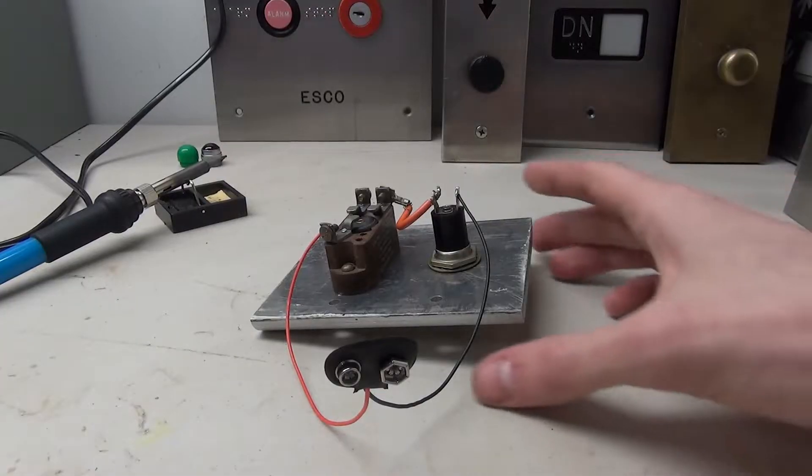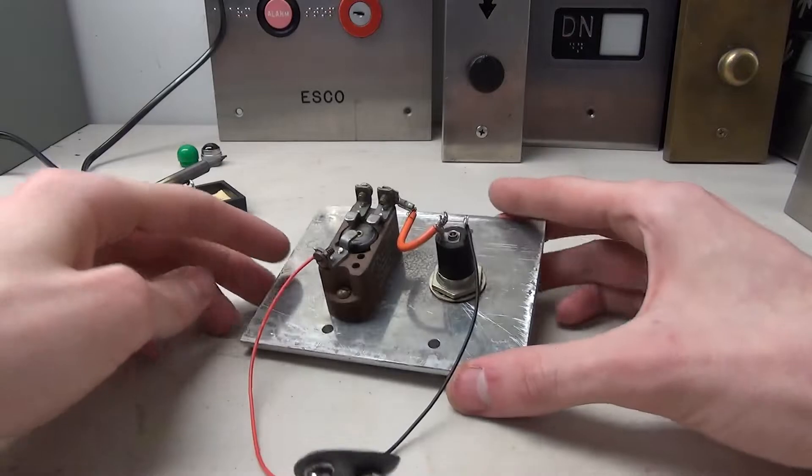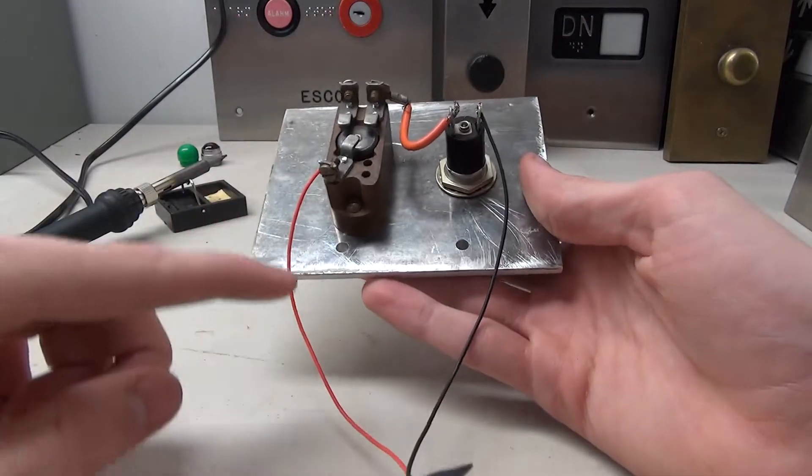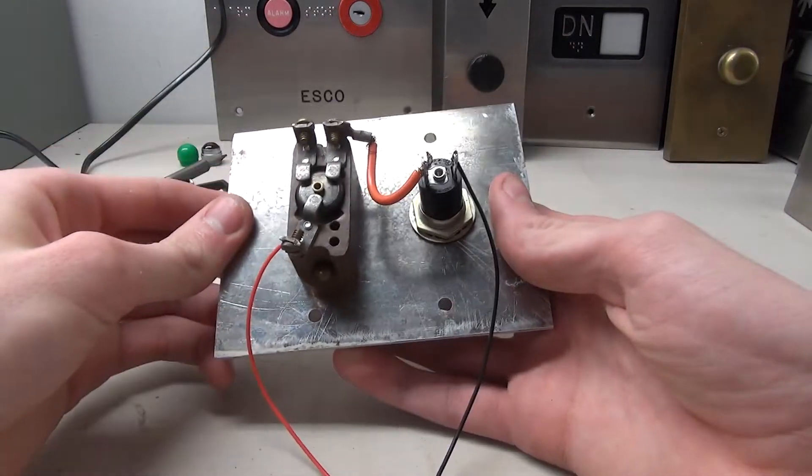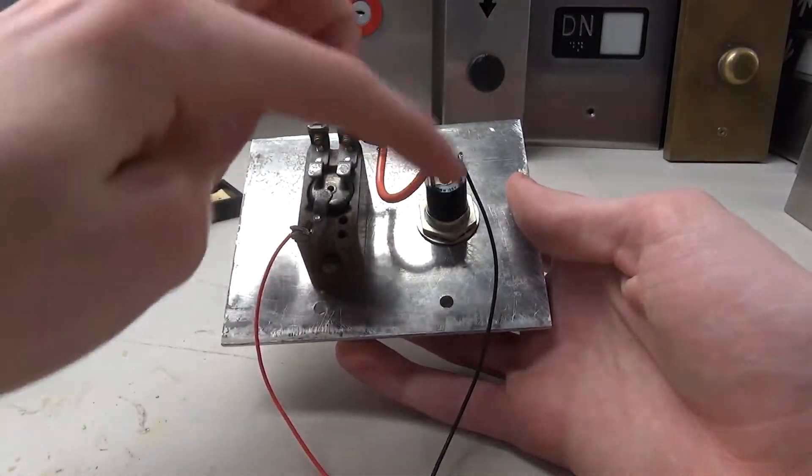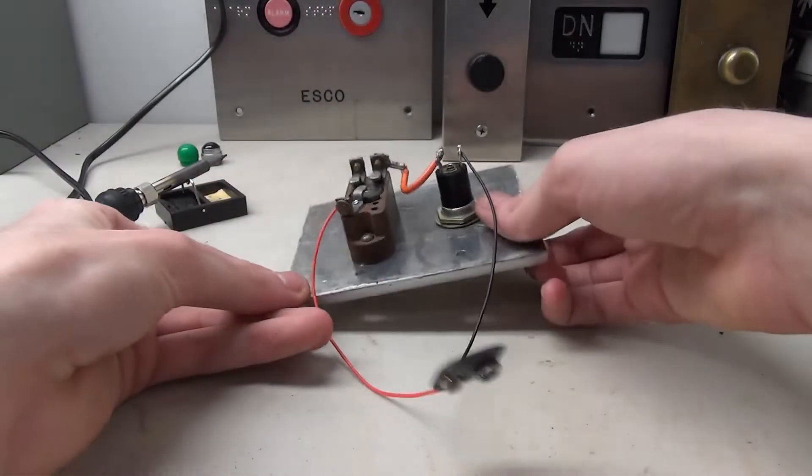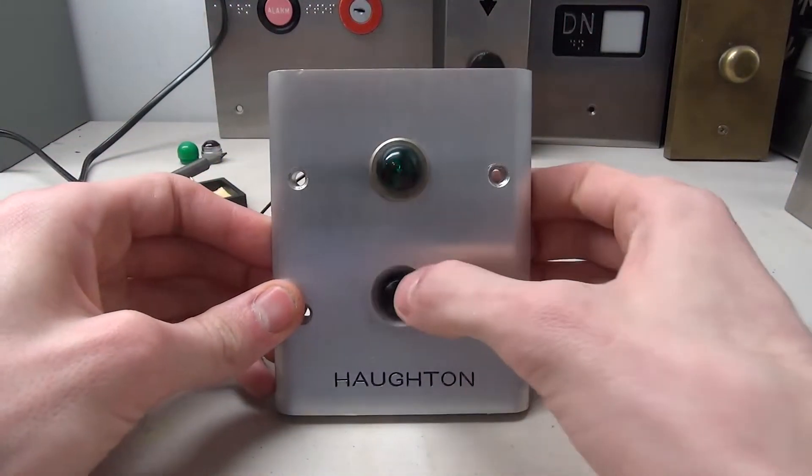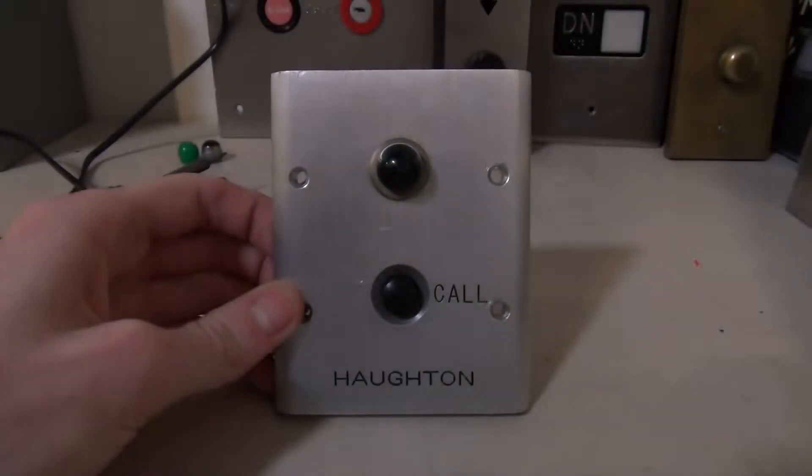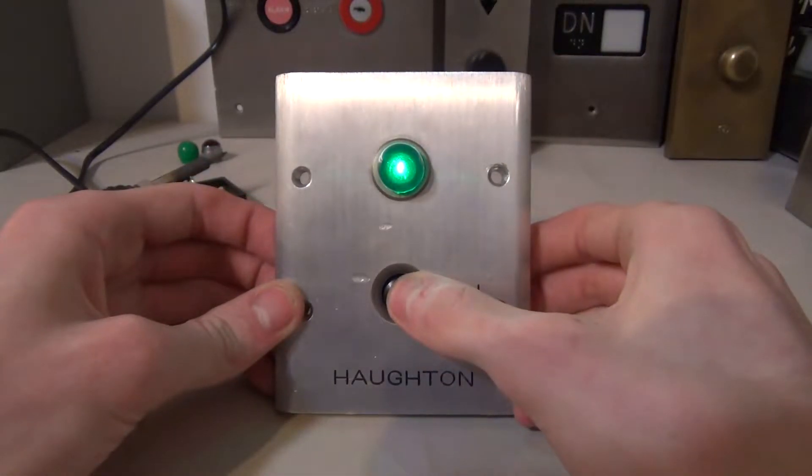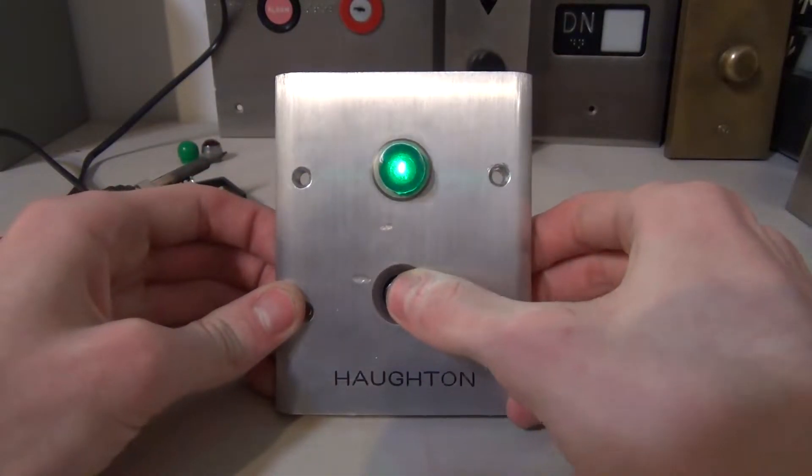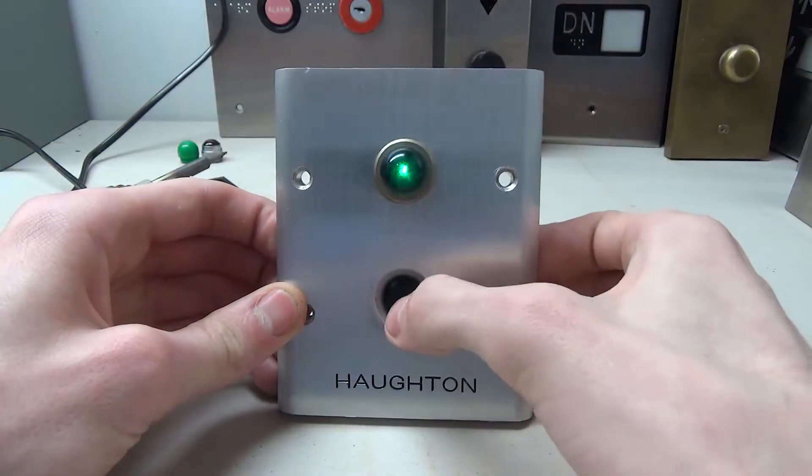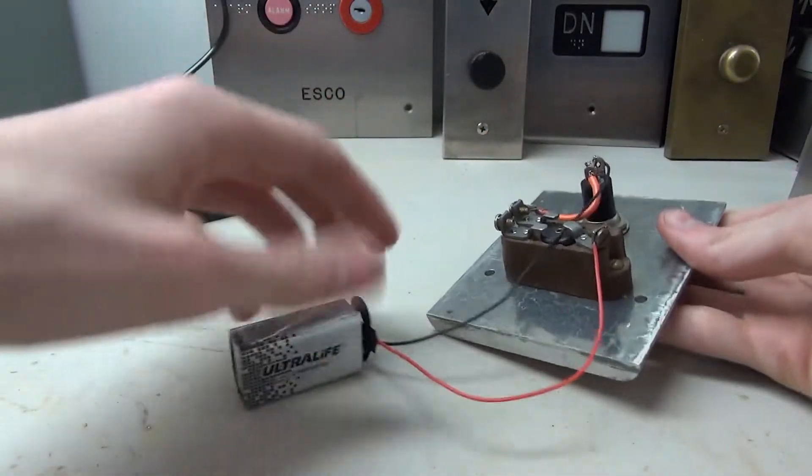All right guys, so we've made the little circuit here. So pretty much all it is, we have the battery box goes through the switch here. So we press down, it completes the circuit. And since it's an incandescent bulb, doesn't matter the polarity. Look at that. Let's turn the light off so you can see it a bit better. Look at that, it lights up. Awesome.